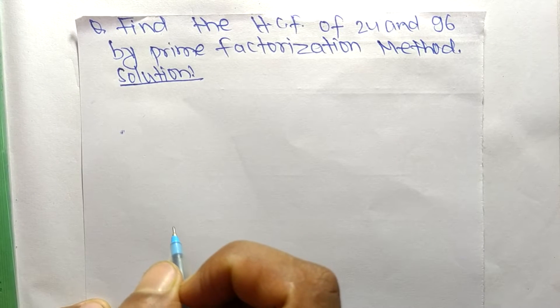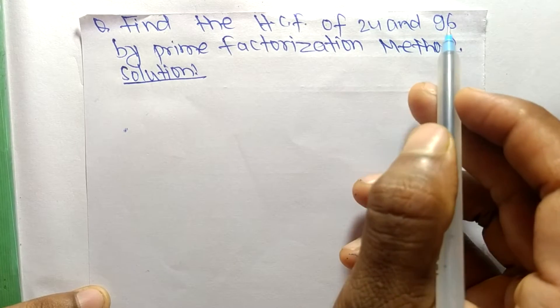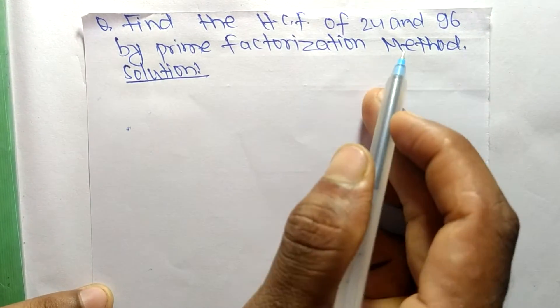So today in this video we shall learn to find the HCF of 24 and 96 by prime factorization method.